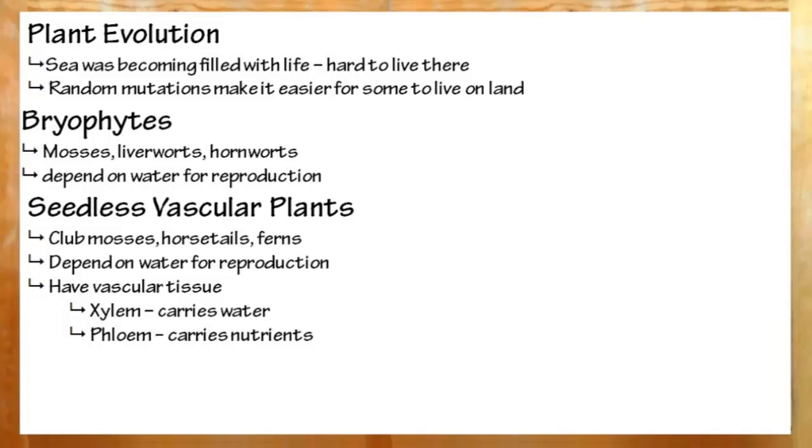Next up, the seedless vascular plants. These also depend on water for reproduction, but have their reproductive structures located very low on the plant, whereas the plant itself can grow very high, so it can perform photosynthesis and get more sunlight. The big innovation here, vascular tissue. This allowed plants to draw water and nutrients from the soil. It acted like a gigantic straw. The two types were xylem, which brought up water, and phloem, which brought up minerals and nutrients. This included the club mosses, horsetails, and ferns.